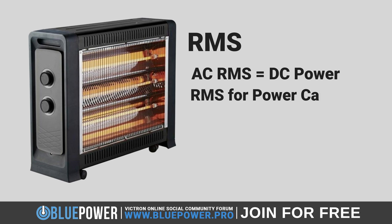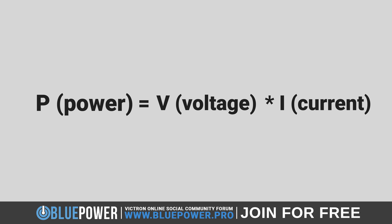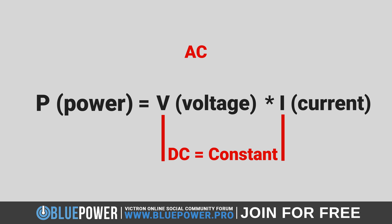The RMS value of the AC voltage is calculated to provide an equivalent steady voltage that would deliver the same power to the heater over time as the varying AC voltage does. The reason for using RMS voltage is related to how power is calculated. In an electrical circuit, P (power) equals V (voltage) multiplied by I (current). In a DC circuit, V and I are constant. However, in an AC circuit, both V and I vary sinusoidally, so the power delivered is not constant.